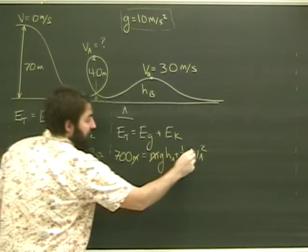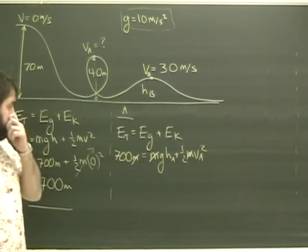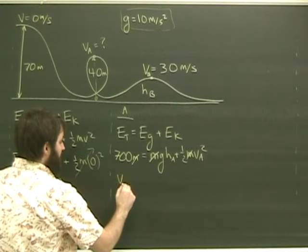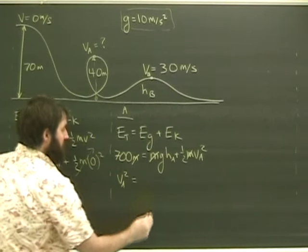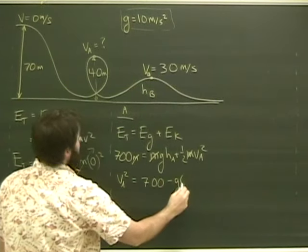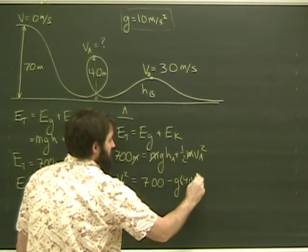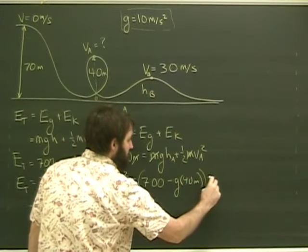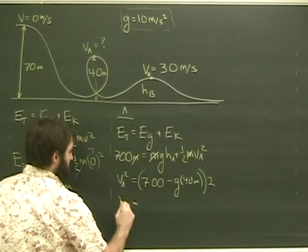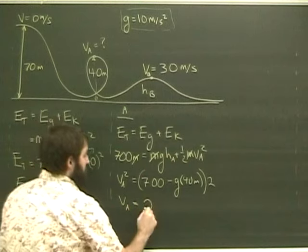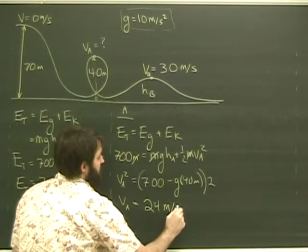Here I'm happy because my masses will all disappear. I rearrange a little bit. I get VA squared equals 700 minus g times 40 meters all times 2. And my speed works out to be 24 meters per second.